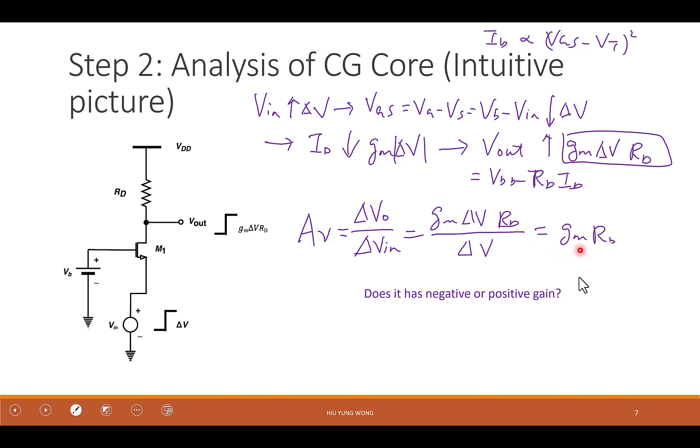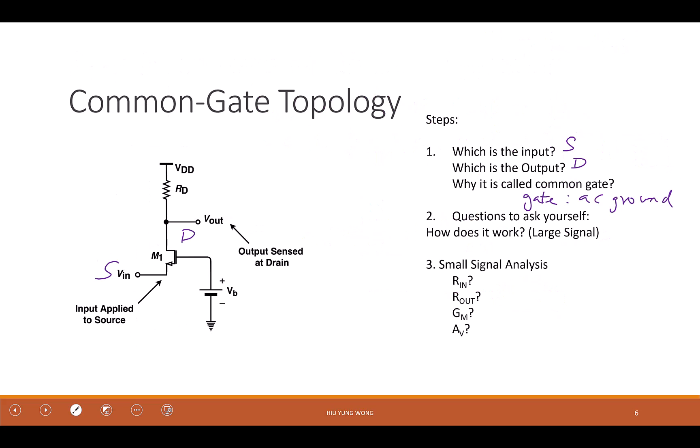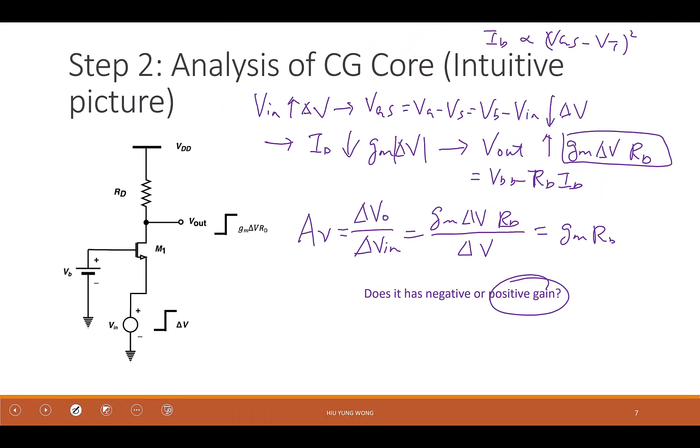So the gain is GM RD. So you see, without solving any small signal circuit, I already know the gain of the common gate. Does it say there is a negative or a positive gain? Based on what we just see. It's positive. Is this familiar to you, GM RD, the gain? Where do you see this before? Forgot? Common source. Very good. Common source. But common source has a negative gain. So it's kind of opposite. The gain is different.